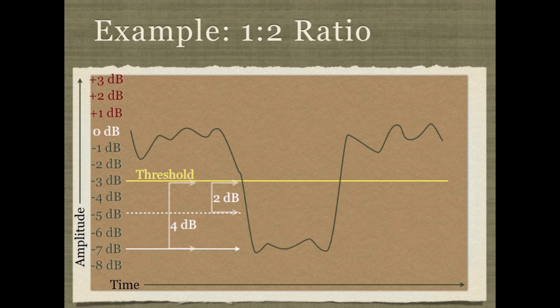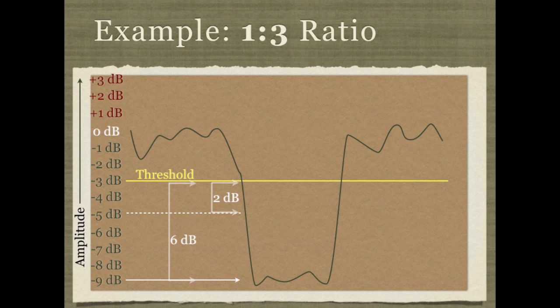Or let's say that we set it to a 1 to 3 ratio. That means that for every decibel that the signal drops below the threshold, it'll be turned down so that it drops a total of 3 decibels below, tripling the amount that it goes below the threshold.